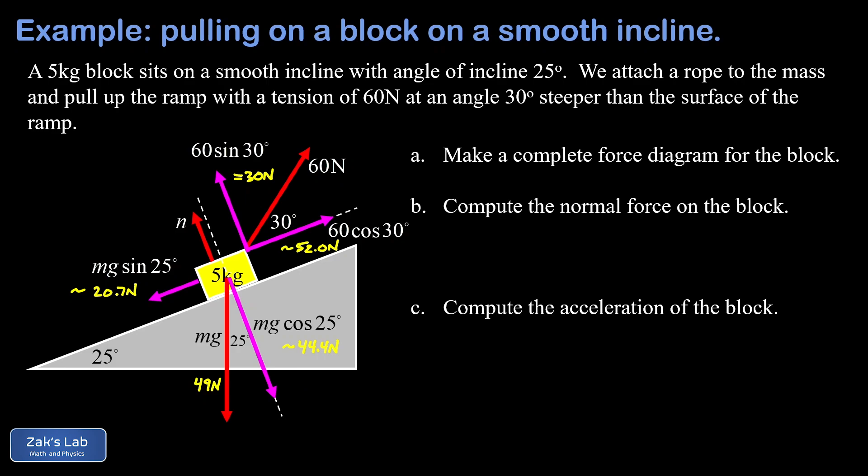In other words, n plus 30 newtons must be equal to that 44.4 newton perpendicular component of gravity. So this gets all the forces balanced in the perpendicular direction, guaranteeing the acceleration is zero in the perpendicular direction. We can quickly solve for n here, and we get 14.4 newtons for that.